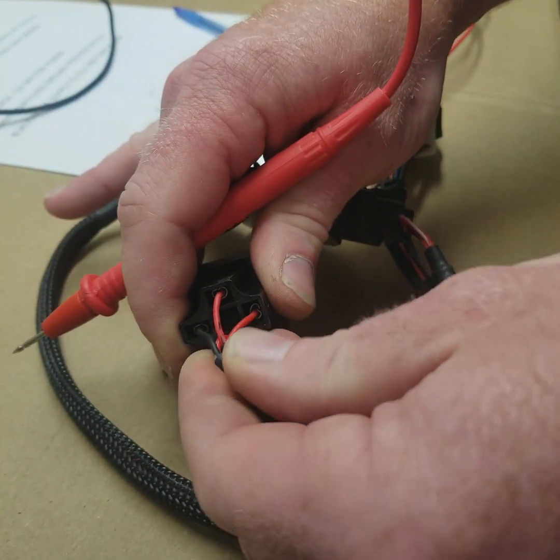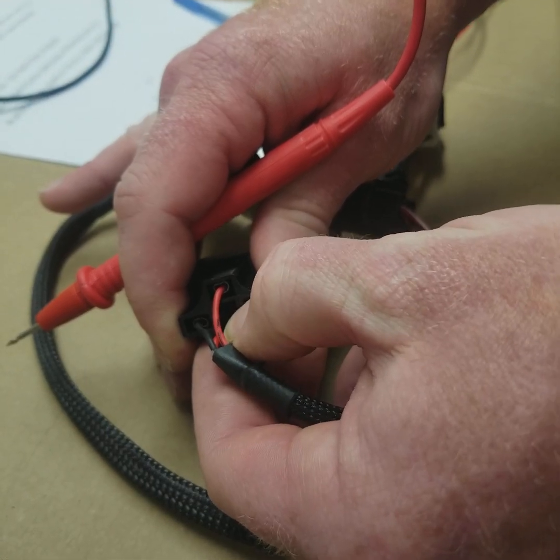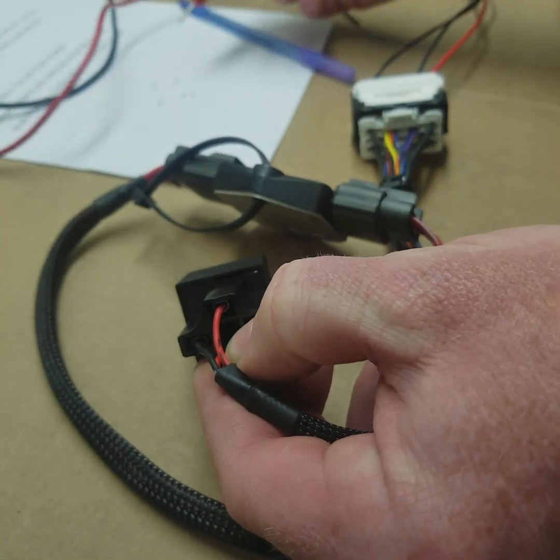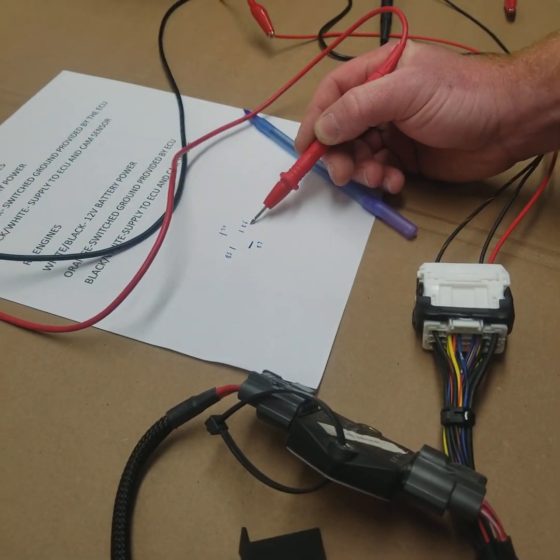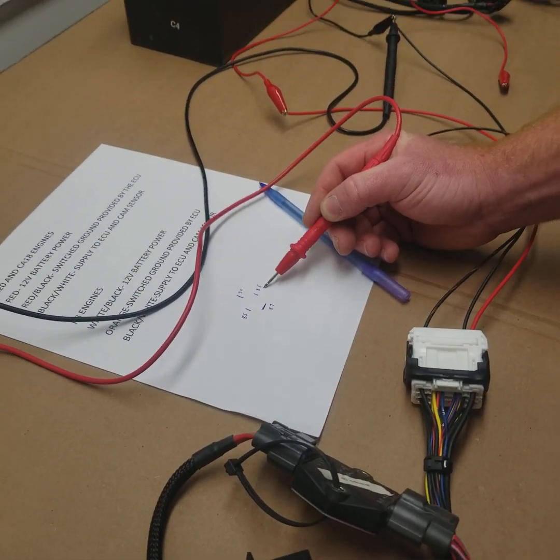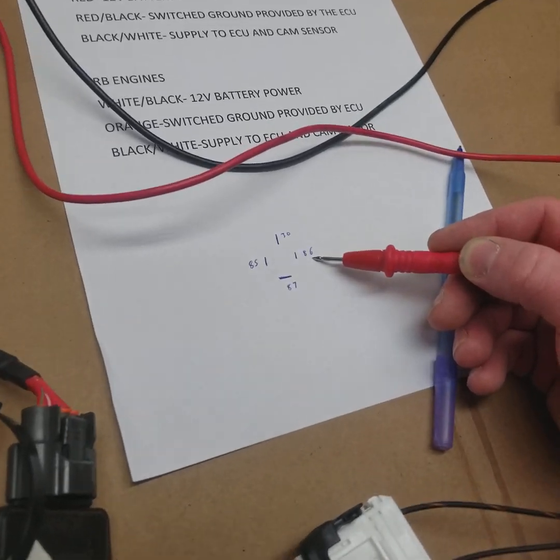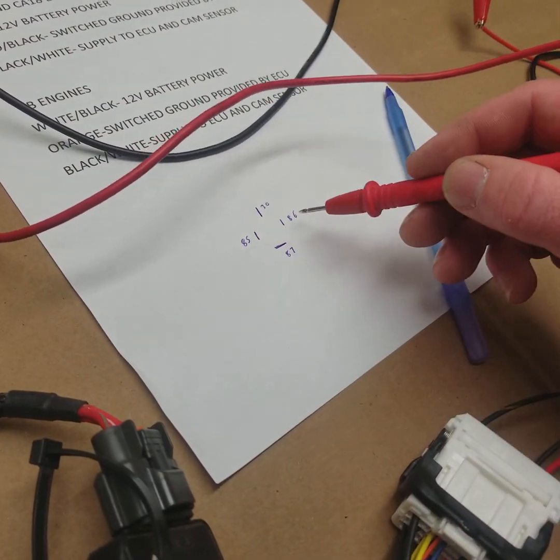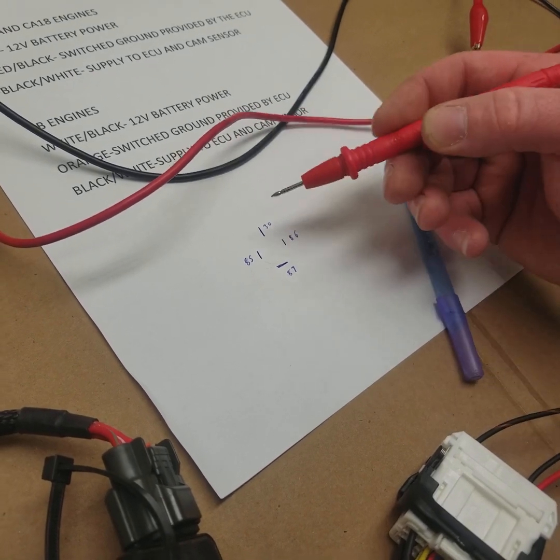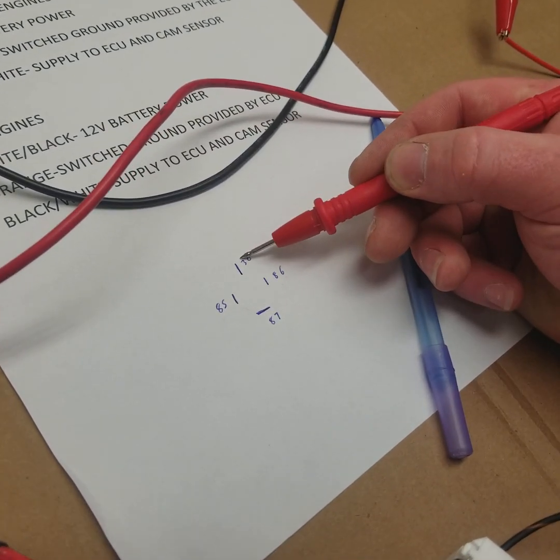Now this wire here, the red with the black tracer, is in pin 86 here on the relay. There's a little diagram here. So what that's going to do is it's going to receive a switch ground from the ECU. Now 85 has power. When 86 gets grounded, it closes the circuit between 30 and 87.